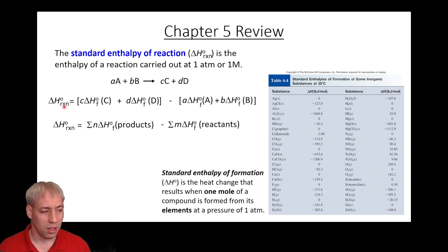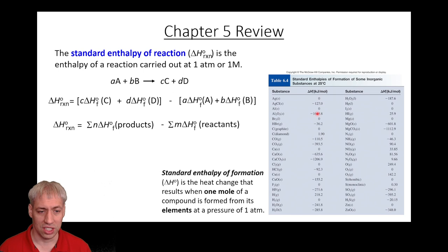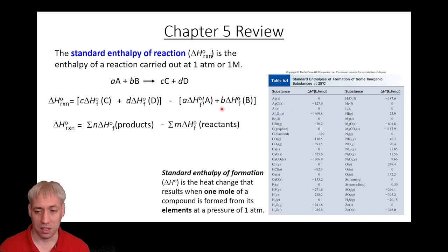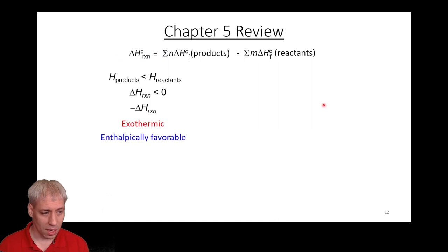We can calculate the standard enthalpy of reaction — you did this in chapter four of general chemistry one. To find delta H of reaction, you take the sum of stoichiometry times delta H for all products, subtract the sum of stoichiometry times delta H for all reactants: products minus reactants. From these tabulated values in the back of the book, this tells you whether energy needed to go in to make the process happen, or whether energy came out as the process occurred.